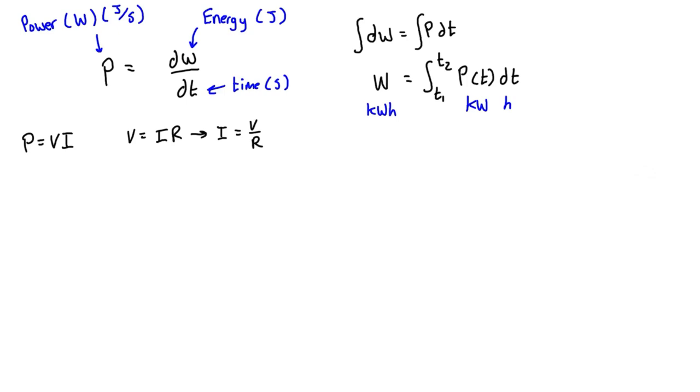If we replace voltage with IR in the power equation, we get P = (IR)I = I²R. Alternatively, substituting current with V/R gives us P = V(V/R) = V²/R.